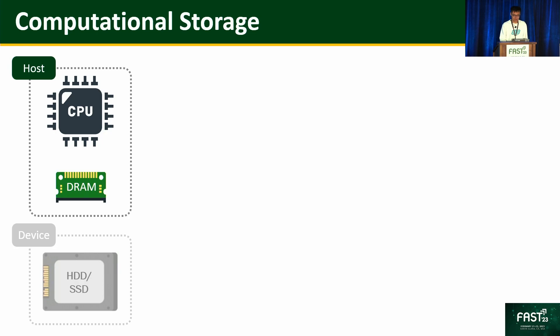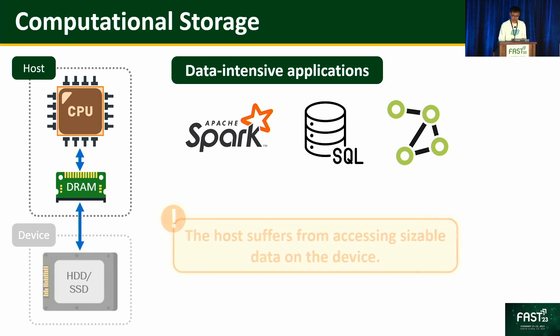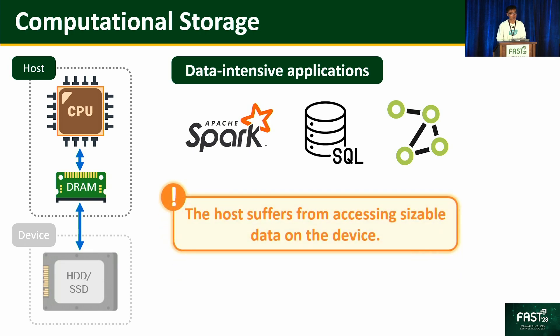The picture shows a conventional computer system. The host has a CPU and DRAM, and the device stores data. In data-intensive applications, the host reads the input from the device to the DRAM, then processes data in the CPU, and writes the output back to the device. In these scenarios, the host suffers from accessing sizable data on the device.